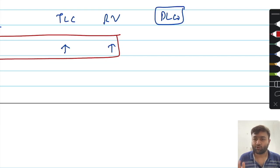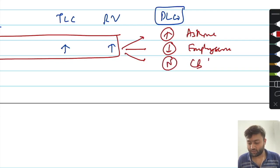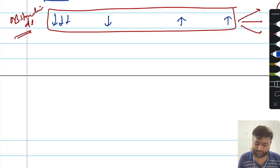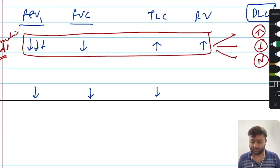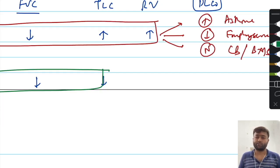In obstructive disease, the DLCO guides which type of obstructive disease the patient has. If DLCO is increased, think of asthma. If DLCO is decreased, think of emphysema. If DLCO is normal, think of chronic bronchitis or bronchiectasis. For restrictive disease: if FEV1 and FVC are both decreased in proportionate ratio and TLC is decreasing, this pattern is suggestive of a restrictive disorder, and residual volume and DLCO will guide the specific type.